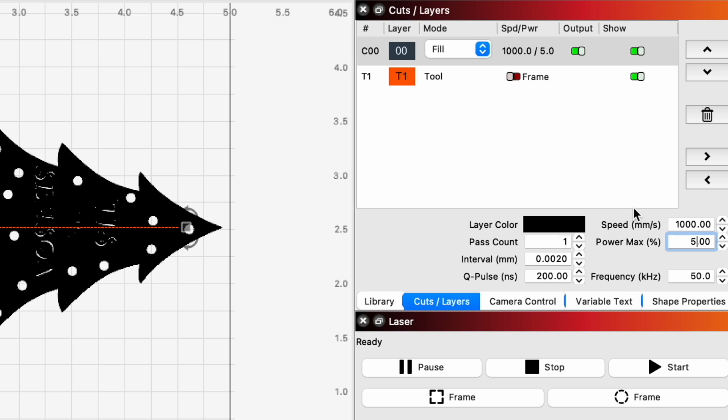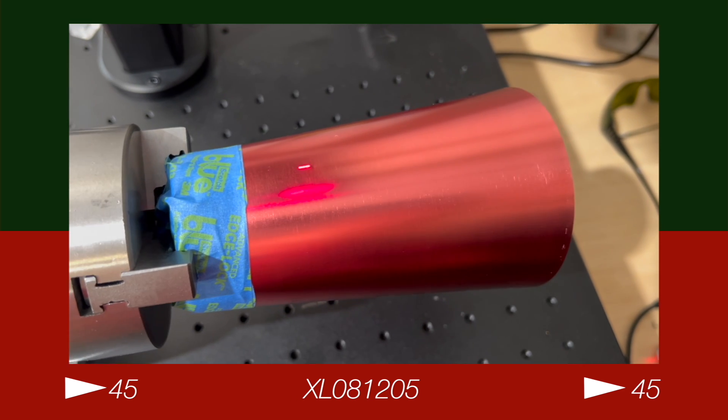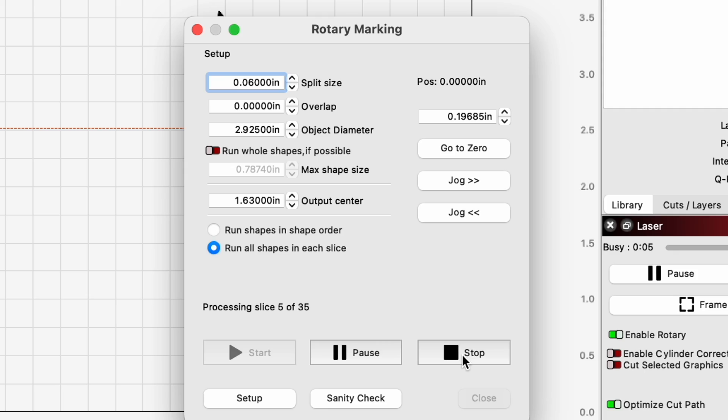I'm going to turn the power down to like 5%. So that's not even going to shoot the real laser. It's just going to shoot the red laser at it. And this will give me an idea if it is going in the right direction. So I've confirmed it is doing it correctly.